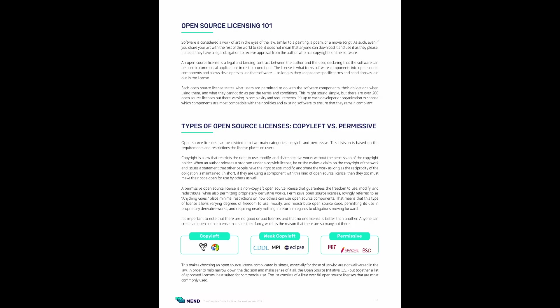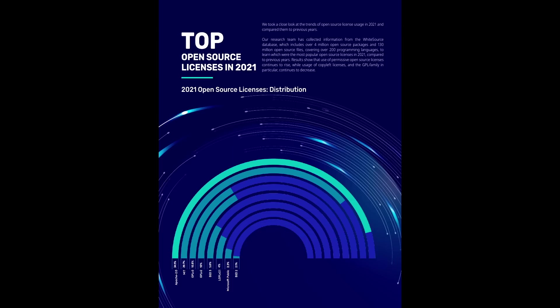The top open source licenses they measured in 2021 — this is the latest one, and they haven't come out with one for 2022 or 2023 yet. Apache was by far the most popularly used open source license. MIT is next, followed by GPL version 3 and 2. Then we have BSD licenses, LGPL, Microsoft Public License, and BSD2. That's kind of the top ones, and the remaining 200 or so fill in the gaps underneath.